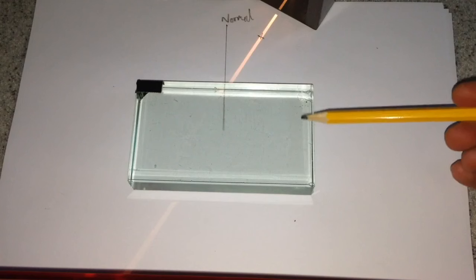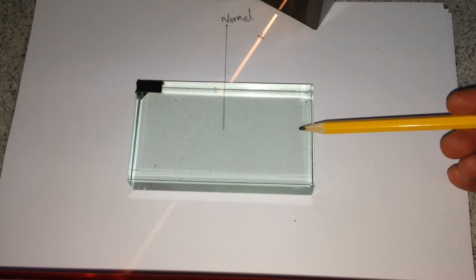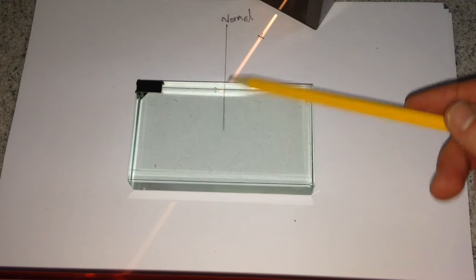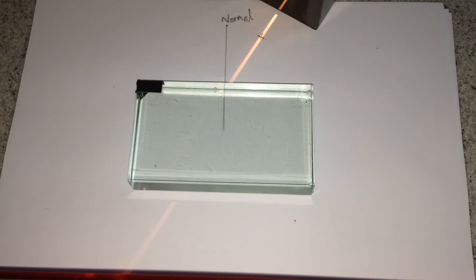Step three, the glass block is now back on the page. We have switched on the power pack and so our ray box is on shining a ray of light through the glass block.